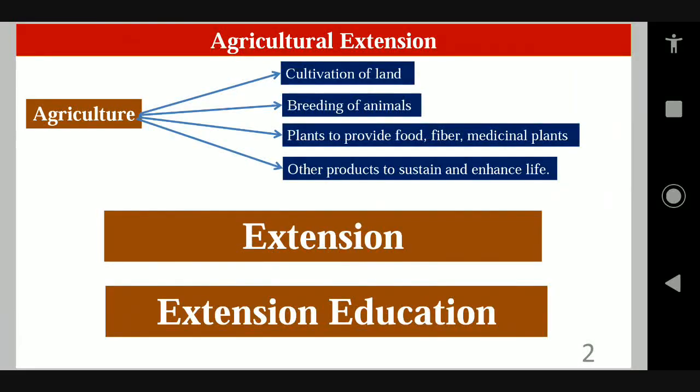What is agriculture? Agriculture is nothing but the cultivation of land and breeding of animals, in which plants also provide food, fiber, medicinal plants and other products to sustain and enhance life. It just helps in sustaining and enhancing life.